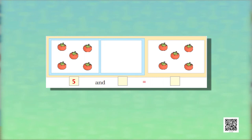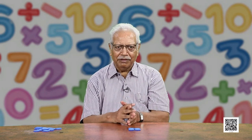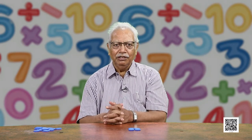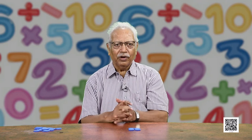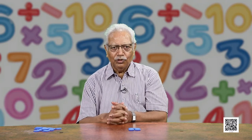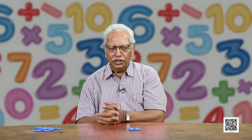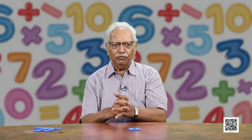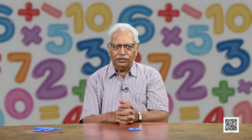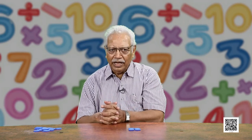Here are 5 tomatoes and we are adding 0 tomatoes to it. So how many tomatoes will remain? They will remain 5 because we have not added any number to it. No change in number is happening. Therefore they remain 5. So, 5 tomatoes and 0 tomatoes is equal to 5 tomatoes, or we can say 5 and 0 equals 5.